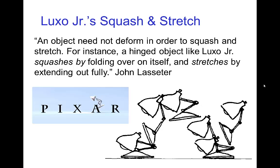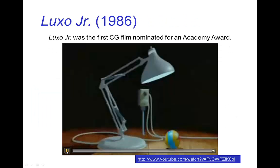Even something which we know is normally not a living character, like a table lamp, with the appropriate use of squash and stretch, a lot of acting can be created and the character brought to life. Here's a quote from John Lasseter: 'An object need not deform in order to squash and stretch. For instance, a hinged object like Luxo Junior squashes by folding over on itself and stretches by extending out fully.' Let's look at a short clip from Luxo Junior.